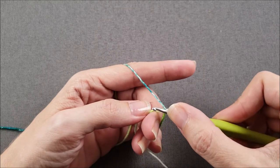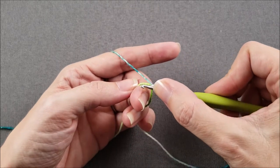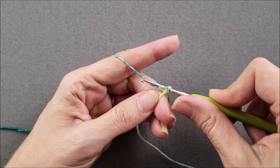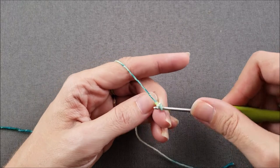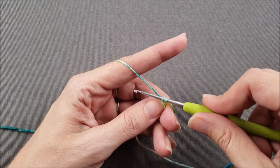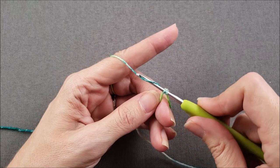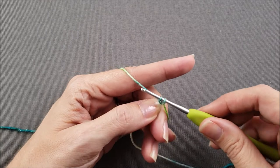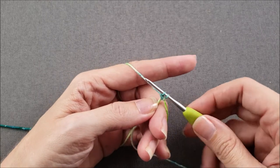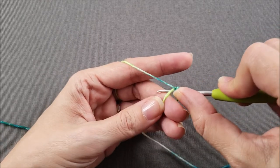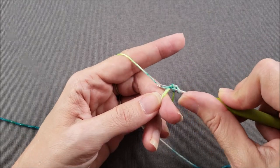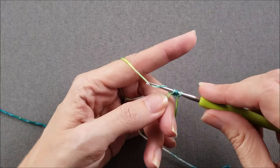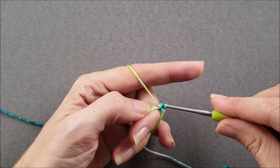So to continue, take your hook, go down through the ring to the left of the working yarn, under the working yarn, hook it and pull it through just one loop. And now we have two stitches. Down through the ring, under the working yarn, hook it and pull it through just one loop.